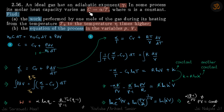We are given molar heat capacity C = α/T. We need to find the work performed and the equation of the process. Like in the previous problem, we are going to start from C = Cv + PdV/dt. Here we have a term of PdV and we are supposed to find the work, and it is given that the temperature goes η times higher.